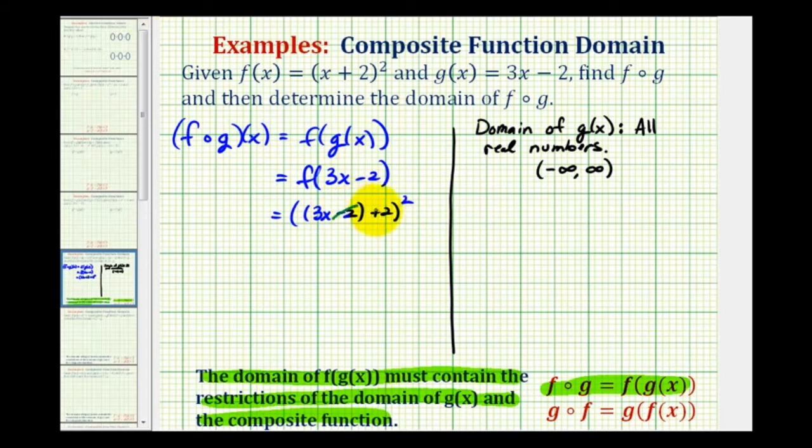Here we have a minus 2 plus 2, that's equal to zero. So this simplifies to 3x squared, which is equal to 9x squared. So our composite function f of g is equal to 9x squared.